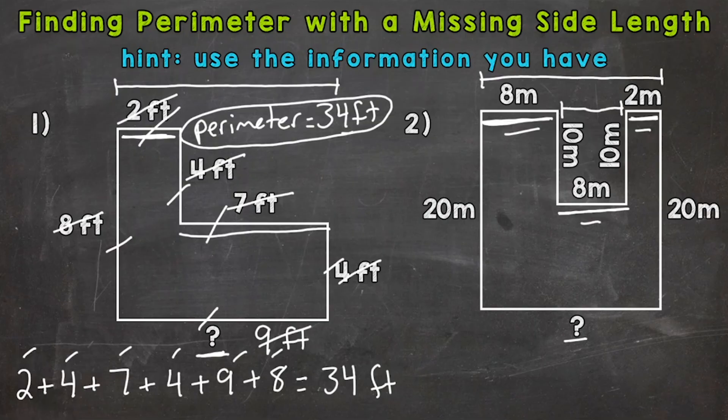So eight plus eight is 16, plus two is 18. So our missing side length is 18 meters.